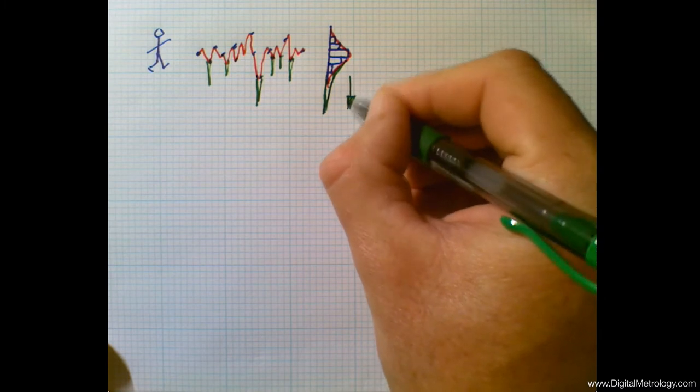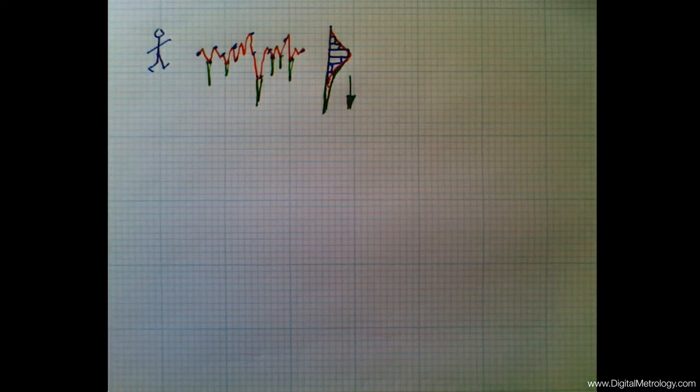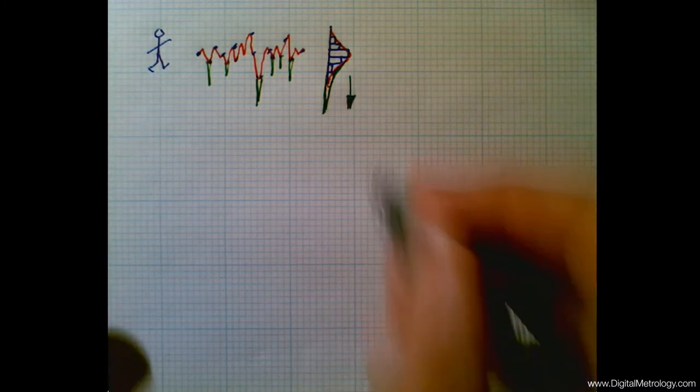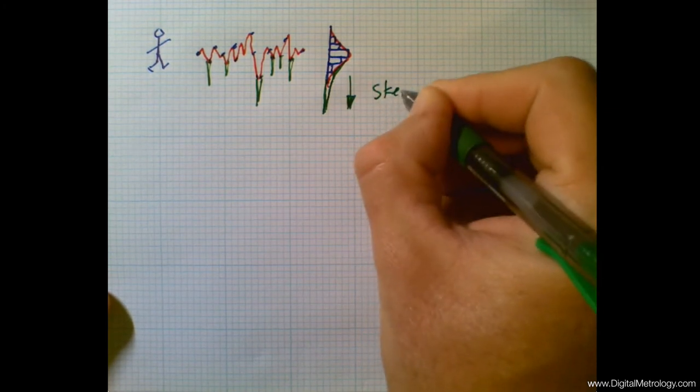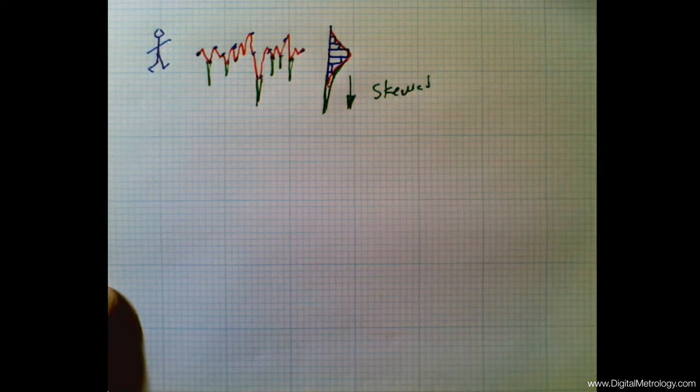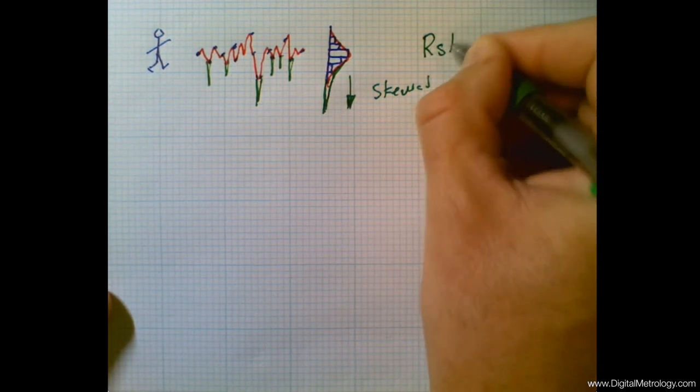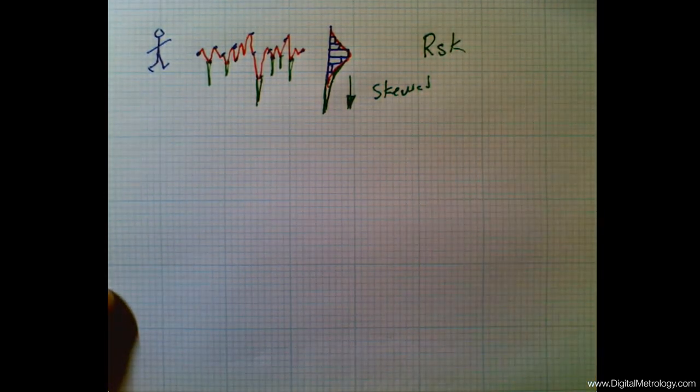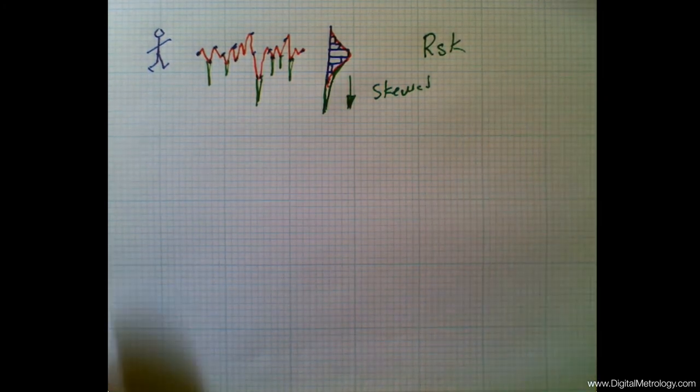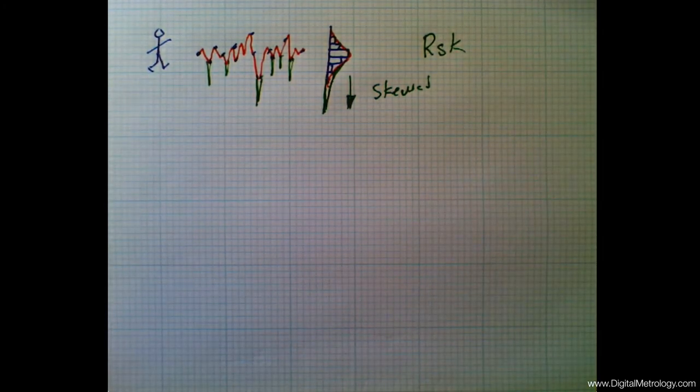Now the stretching of a bell curve is referred to as skewing the curve, S-K-E-W. We've skewed the distribution downward, and there's a roughness parameter for this. The RSK parameter is skewness, and this is a popular parameter but it has a few problems.